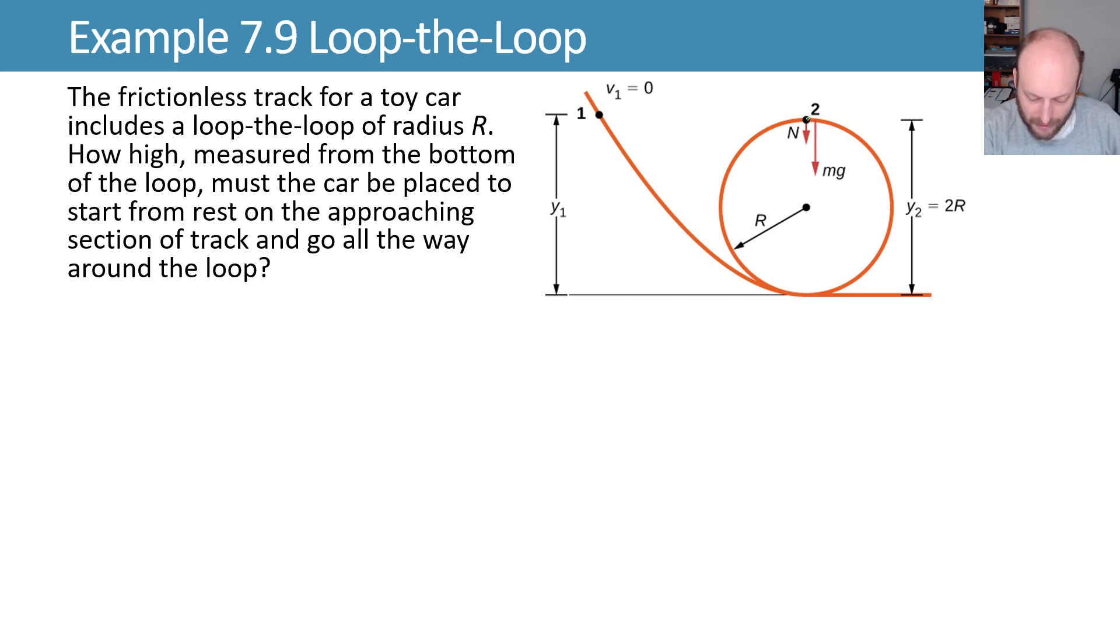What that means is that we have to at this top point of the loop have some velocity at that point too to get us all the way around. So we want to know what's this original height y1 in order that we have enough velocity to make it around at that point too.